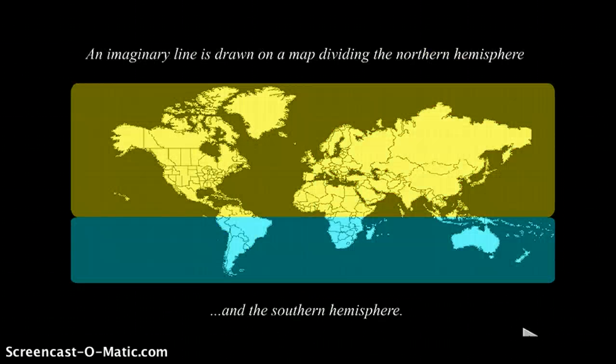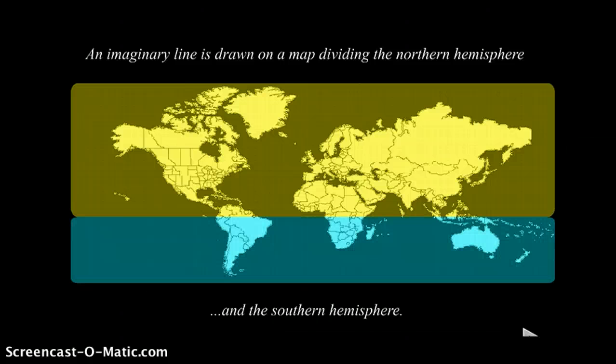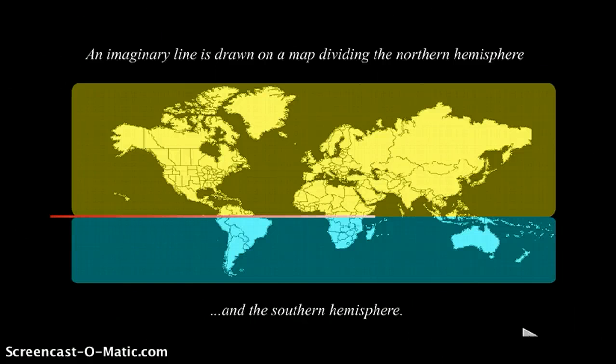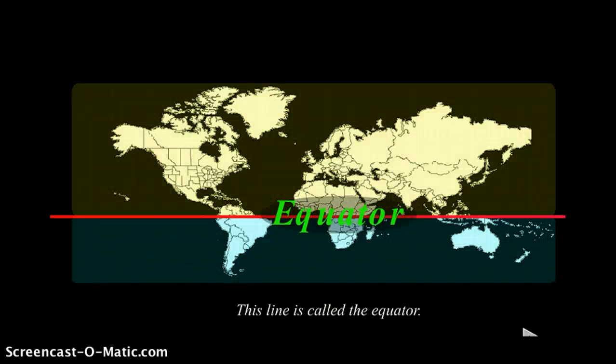An imaginary line is drawn on a map dividing the northern hemisphere and the southern hemisphere. That imaginary line you know is called the equator.